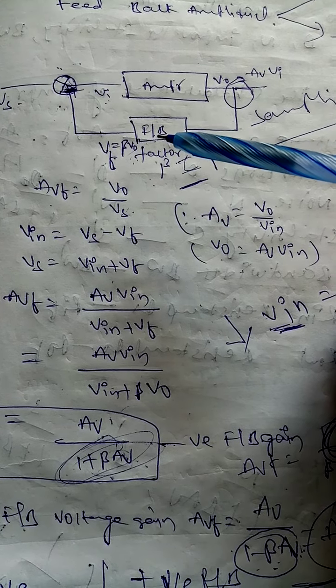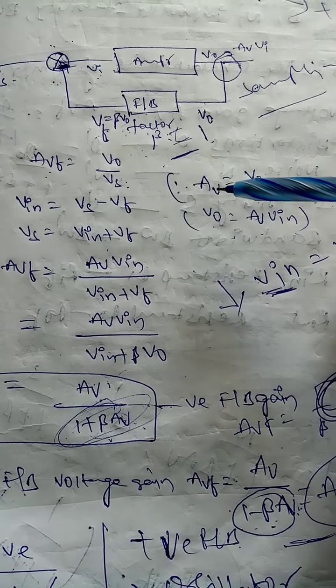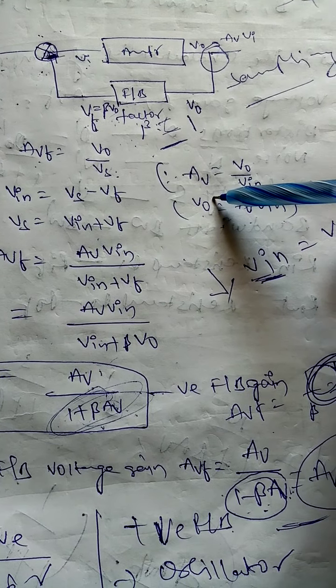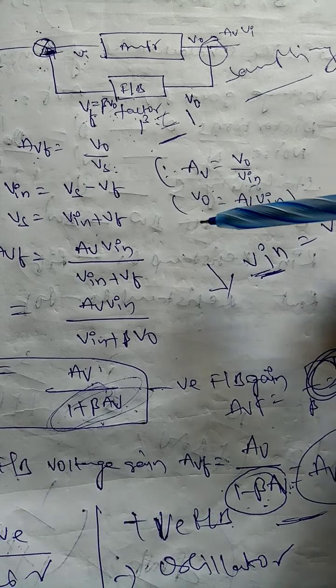When the mixer point results in the feedback voltage being in phase with the input voltage, that is called positive feedback. When the feedback voltage is out of phase with the input voltage, that is called negative feedback. Positive feedback applications include oscillators and multivibrators, while negative feedback applications include amplifiers.